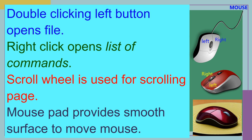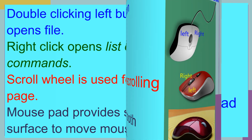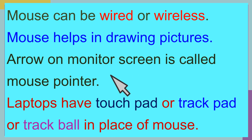The mouse pad provides a smooth surface to move the mouse. The mouse can be wired or wireless. The mouse also helps in drawing pictures. The arrow on the monitor screen is called the mouse pointer. Laptops have a touchpad, track pad, or trackball in place of a mouse.